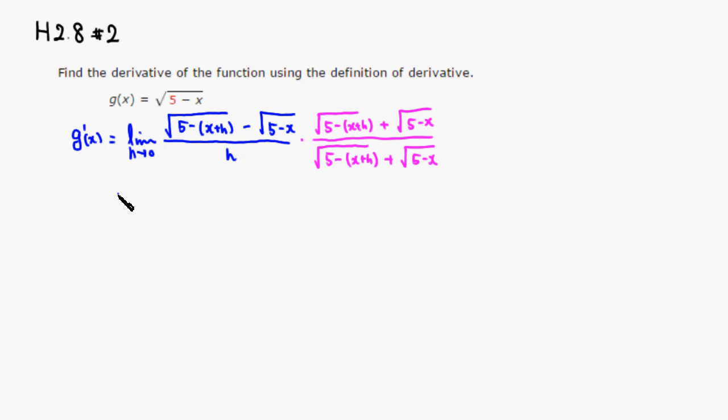Then if you multiply out, we have limit as h approaches 0. Then you have a minus b times a plus b, so that's squared, which is just without the square root.